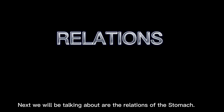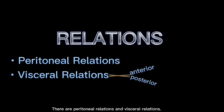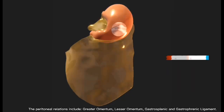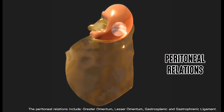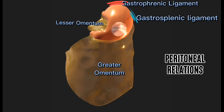Next we will be talking about the relations of the stomach. There are peritoneal relations and visceral relations. The peritoneal relations include the greater omentum, lesser omentum, gastrosplenic ligament, and gastrophrenic ligament.